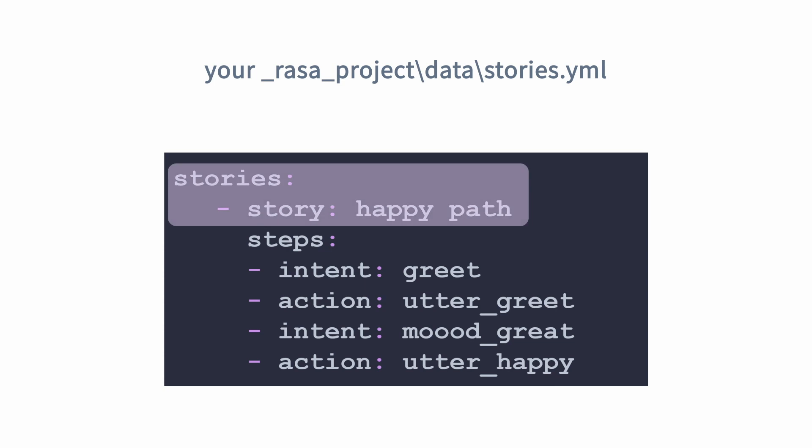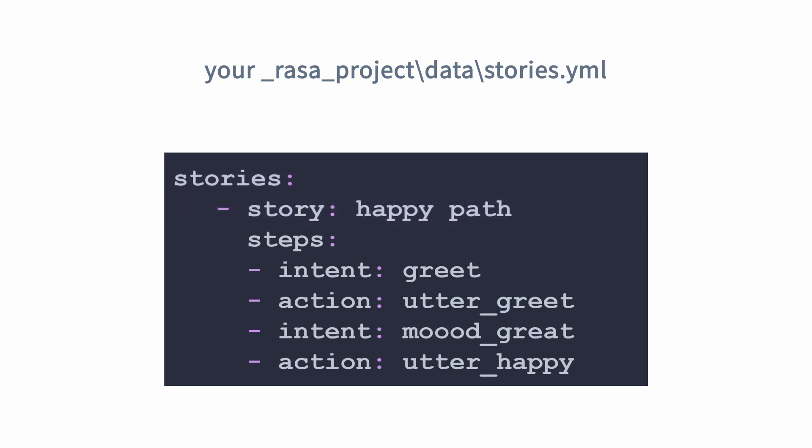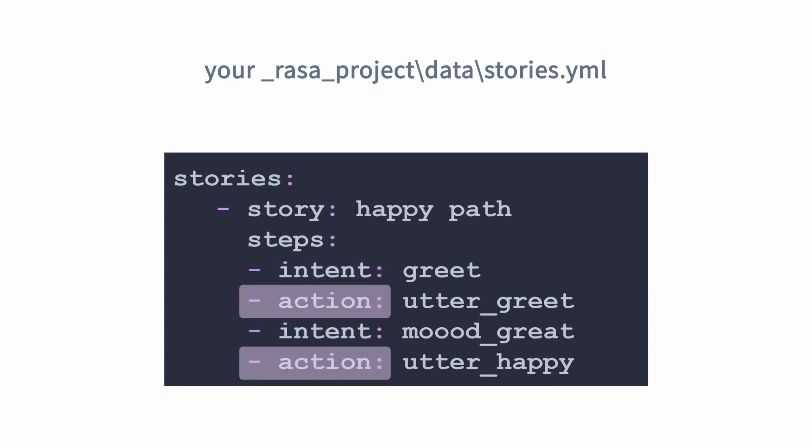In the stories.yaml file, the story name — such as 'happy path' — is a descriptive label. Then you have the conversation pattern: intents are things the users say that your machine learning model has detected, and actions are things your assistant does. Actions beginning with 'utter' are things said to the user. For example: the user says hi, the ML model detects they're greeting, and the assistant responds with utter_greet. Then the user says something like 'I'm feeling good', recognized as them having a great mood, and you respond with a specific utterance.